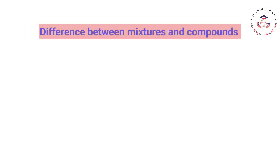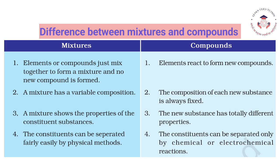Difference between mixtures and compounds: Elements or compounds just mix together to form a mixture and no new compound is formed, whereas elements react to form new compounds. A mixture has a variable composition, while the composition of each compound is always fixed. A mixture shows the properties of the constituent substances, but the new substance in a compound has totally different properties. The constituents of a mixture can be separated fairly easily by physical methods, whereas in compounds they can be separated only by chemical or electrochemical reactions.